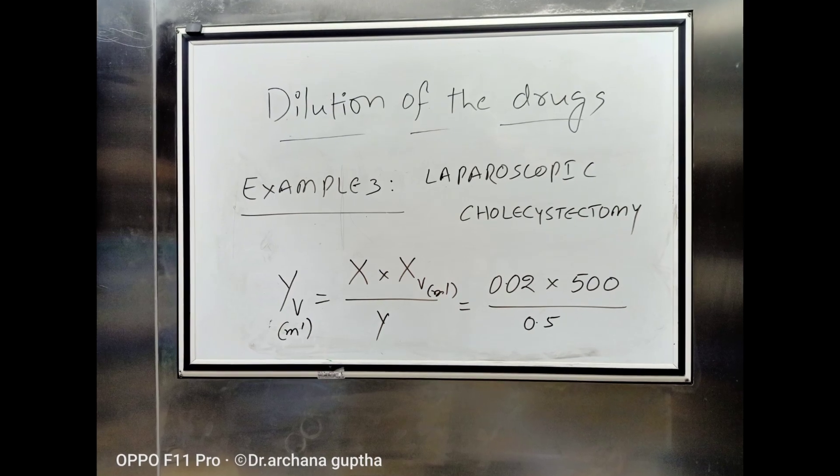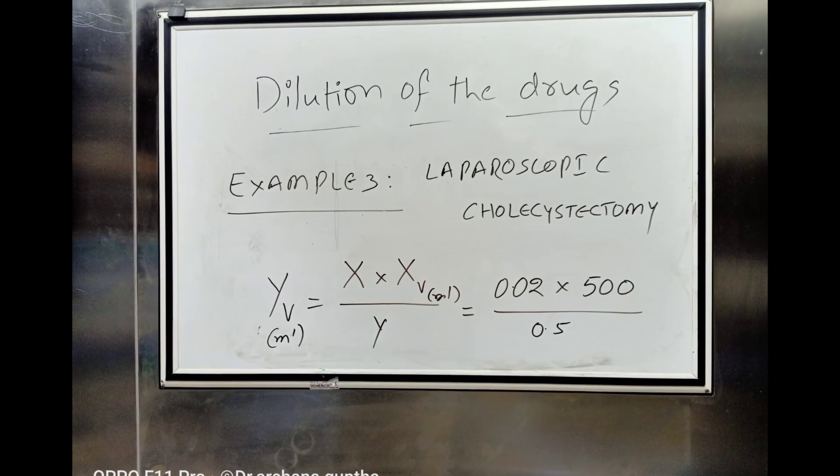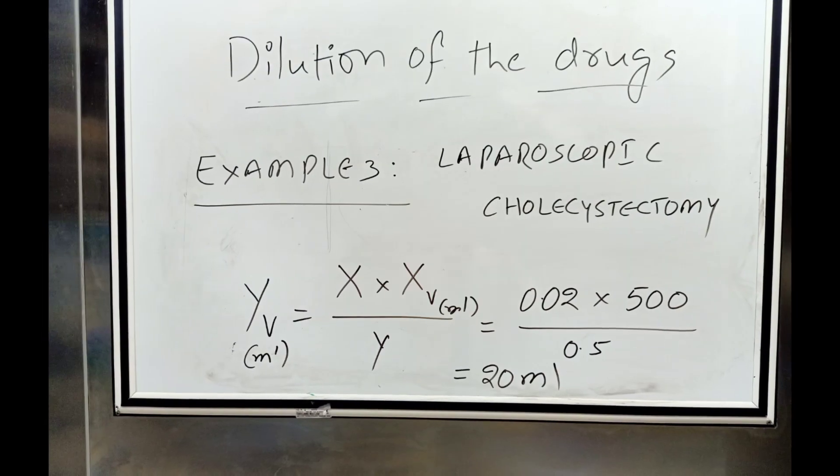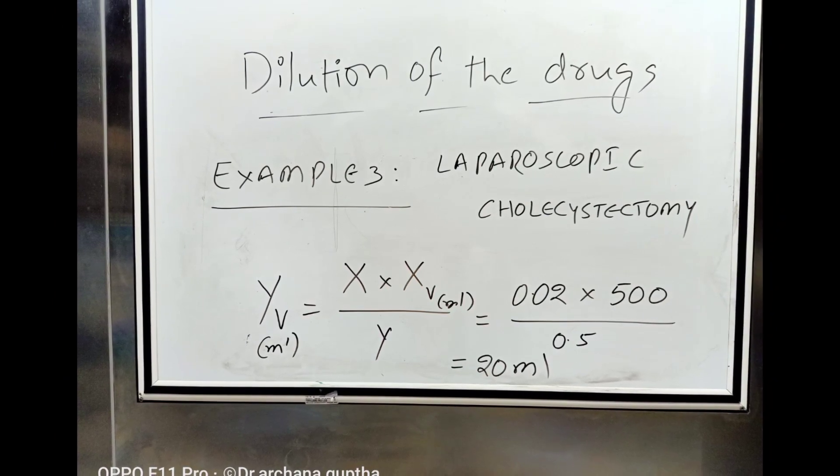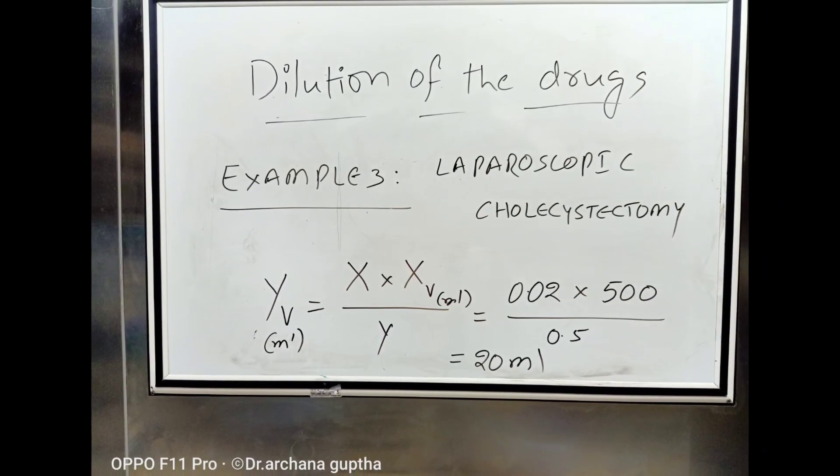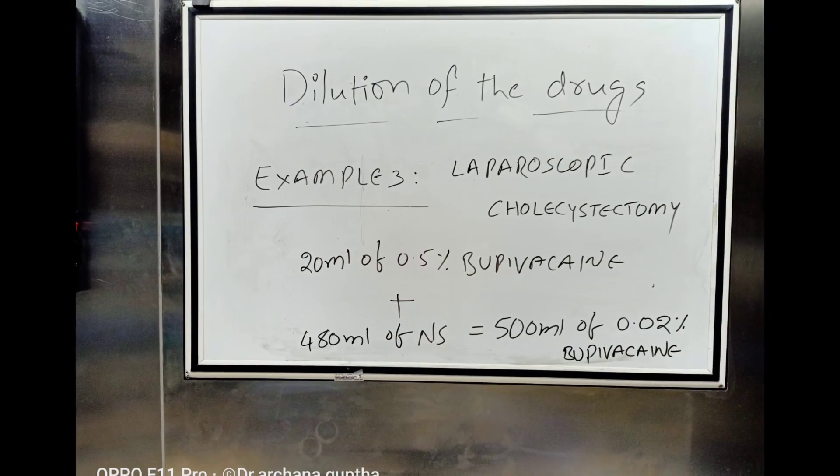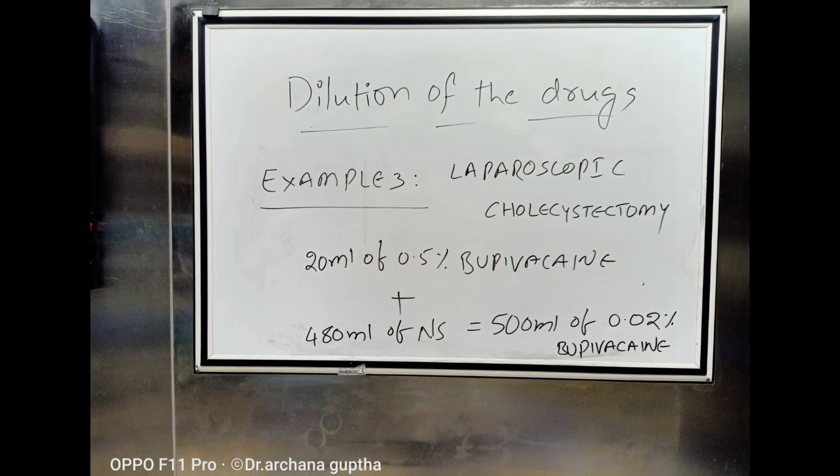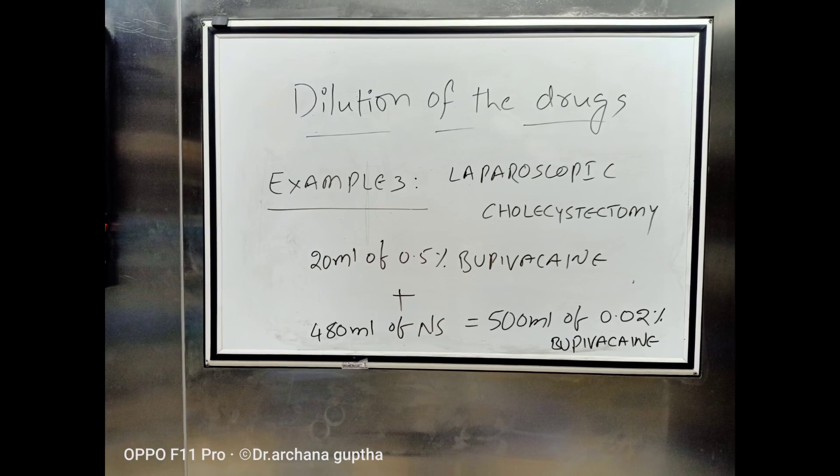Let us see how to get 0.02% concentration of bupivacaine solution by using the available 0.5% concentration. Applying the above formula, YV equals desired concentration times desired volume divided by available concentration. So that is 20 ml. 20 ml of 0.5% bupivacaine needs to be diluted with 480 ml of normal saline to get the desired concentration of 0.02%.